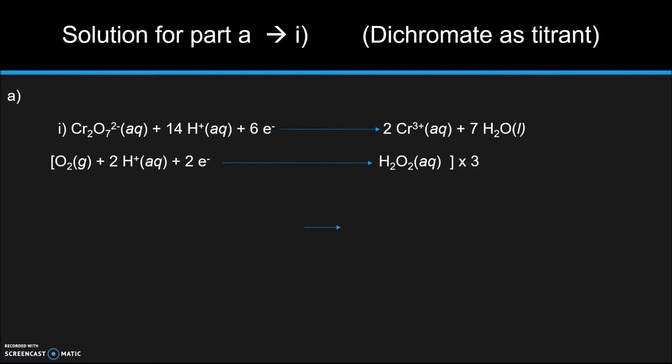And what we're going to have to do to the second one is multiply the entire half reaction by 3 in order to get the electrons to equal. See, we have 6 over here and we only have 2 over here. Now we're also going to have to flip it because if you notice, in our dichromate reaction, we have H₂O₂ on the left side and here we have it on the right side. So we're going to want to flip this.